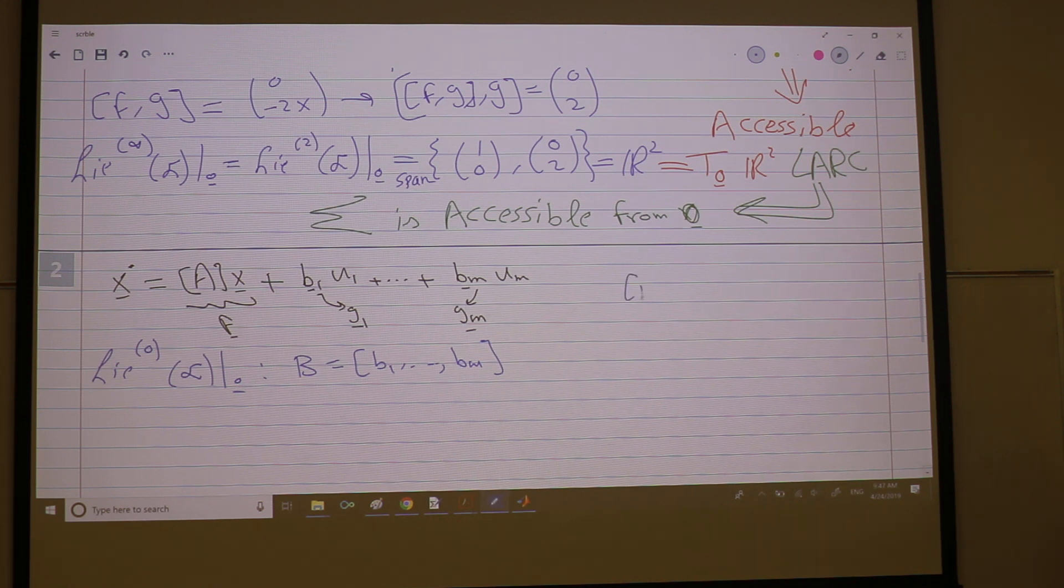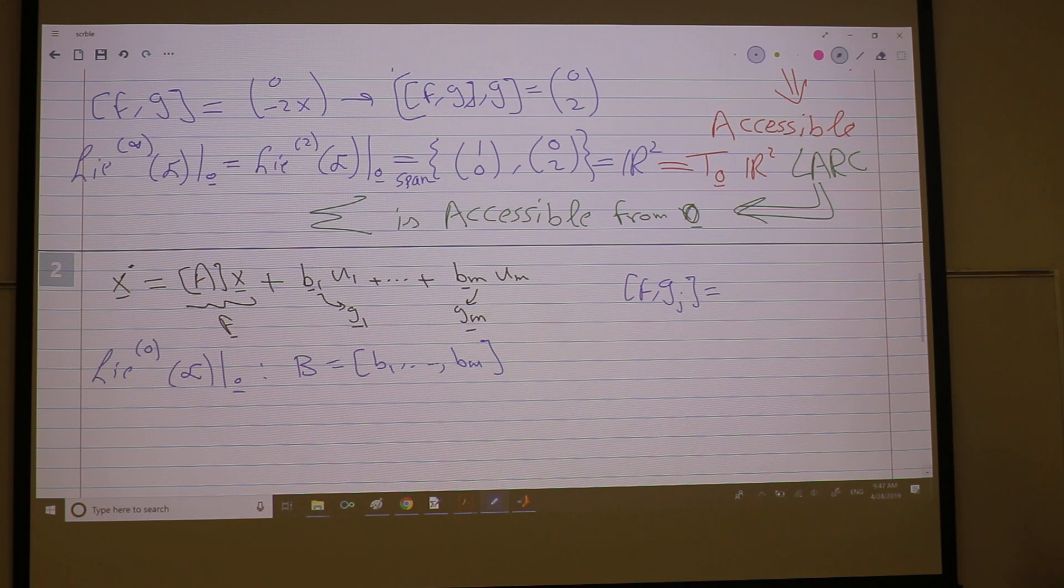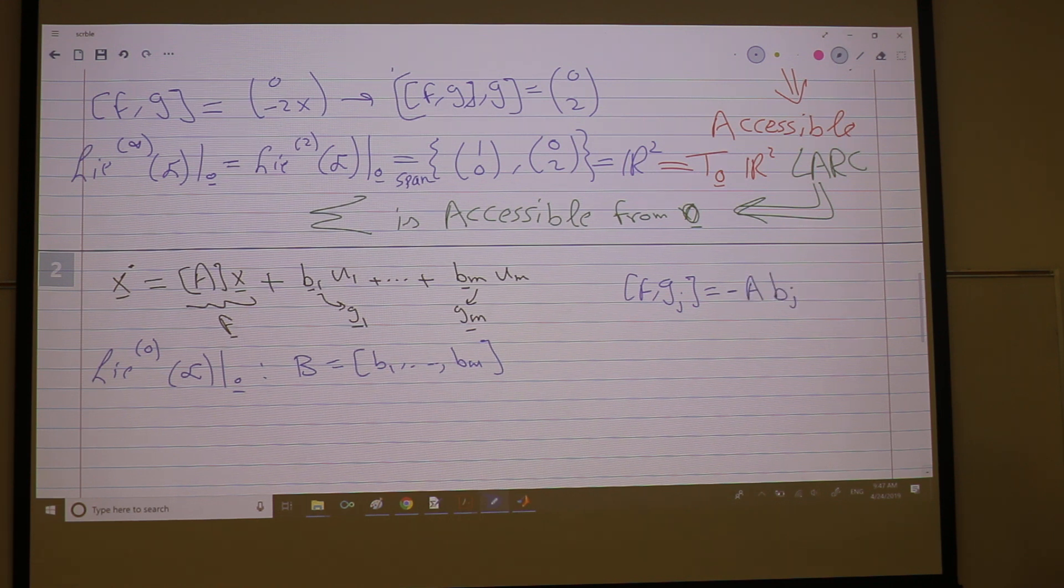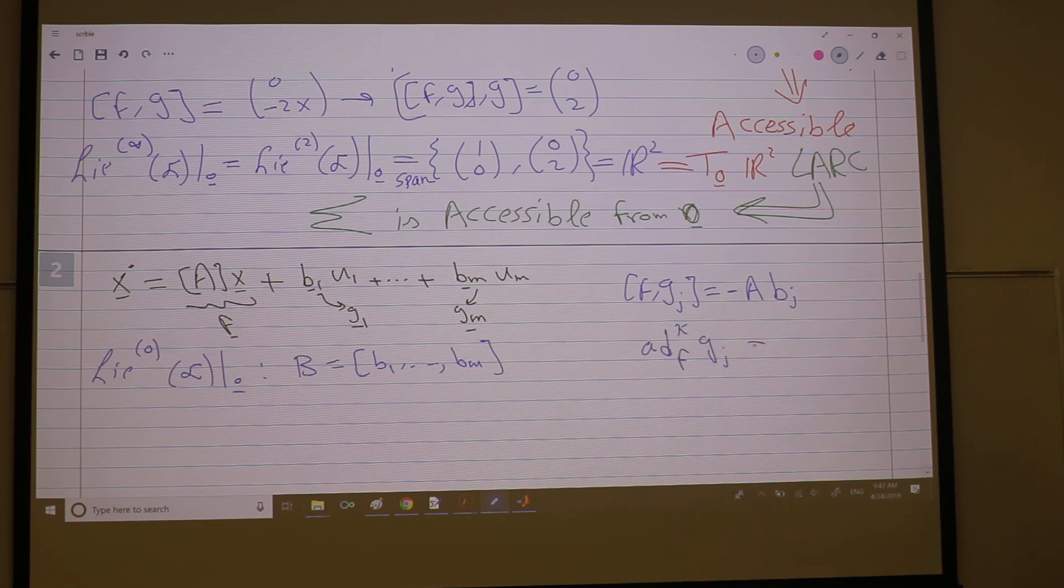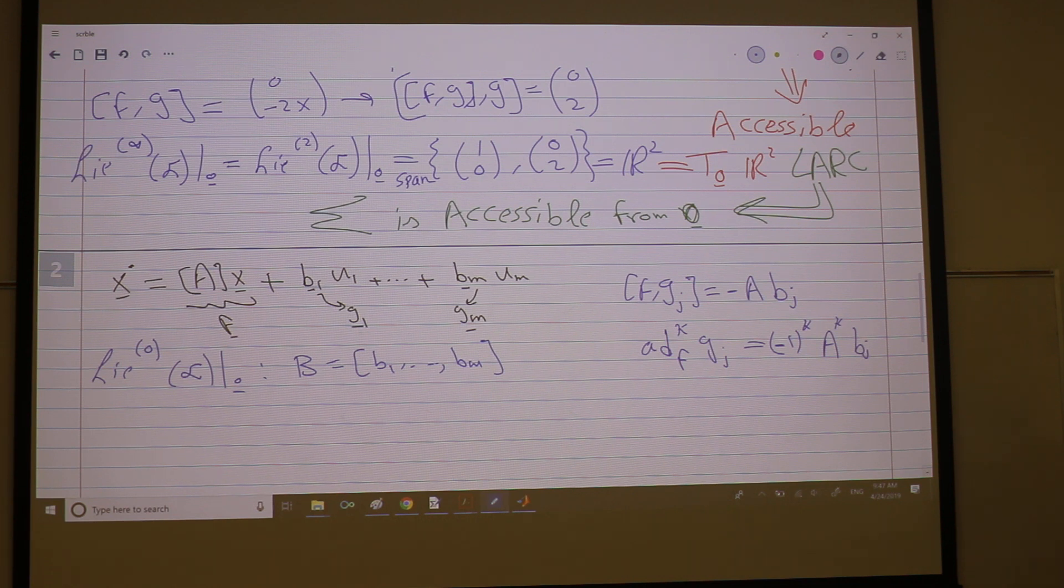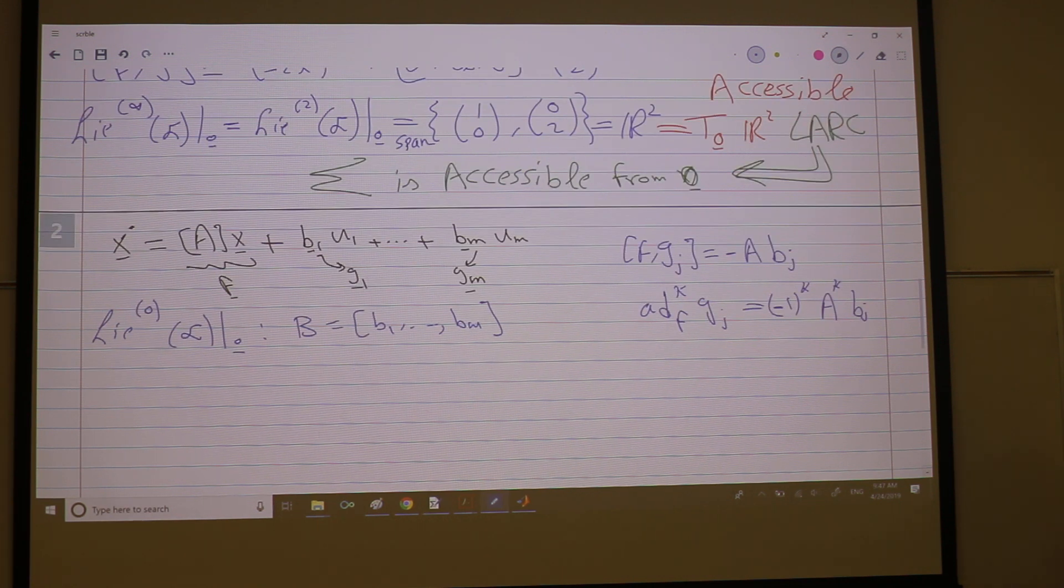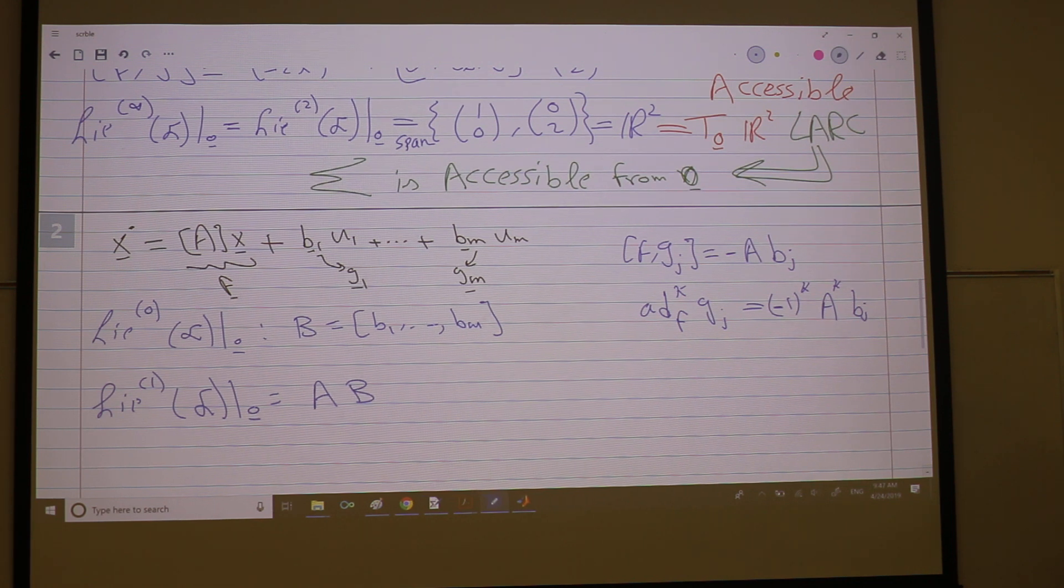What about Lie-1? Let's compute the Lie bracket between F and G. What's the Lie bracket between F and G? This was negative A times B. Actually you proved more. You proved that the ad_F^K G_j, this is what you proved, it was negative one to the K, A^K B, right? So now what is Lie-1 of F at zero? Well, I'm doing first order Lie bracket. It's just A times the B's, right? So this is AB's, the span of AB.